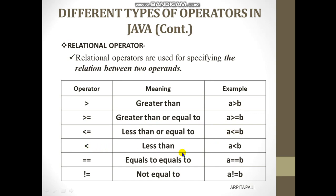The less-than sign checks if a is less than b. The equals-to-equals-to operator, popularly called double equals, is used to check if the value of a and the value of b are equal. The not-equal-to operator checks if the value of a and the value of b are not equal. These are the popular relational operators used in Java.